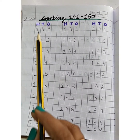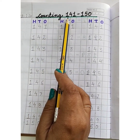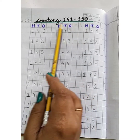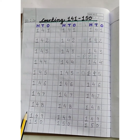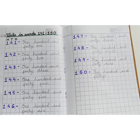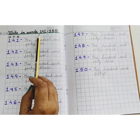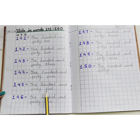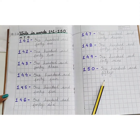In written, write counting 141 to 150 like this in your copy. Write number names 141 to 150 like this in your copy. Thank you, children.